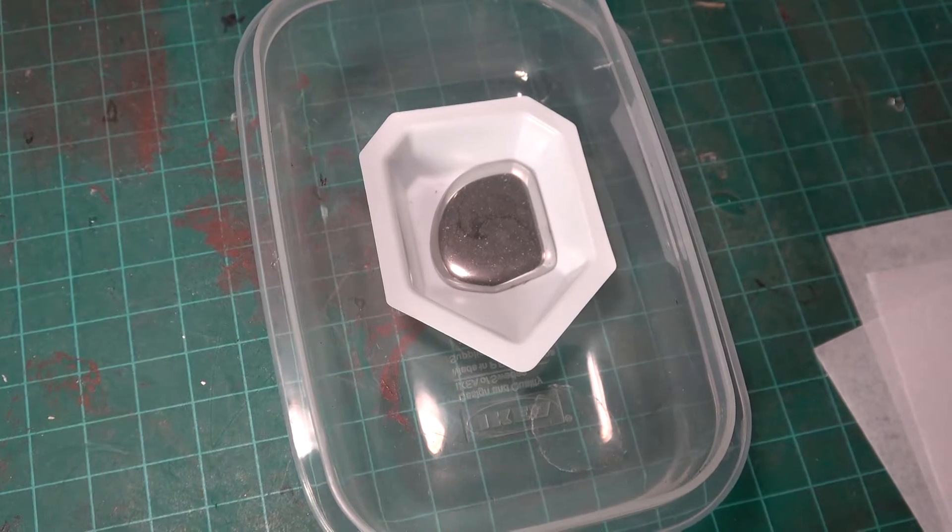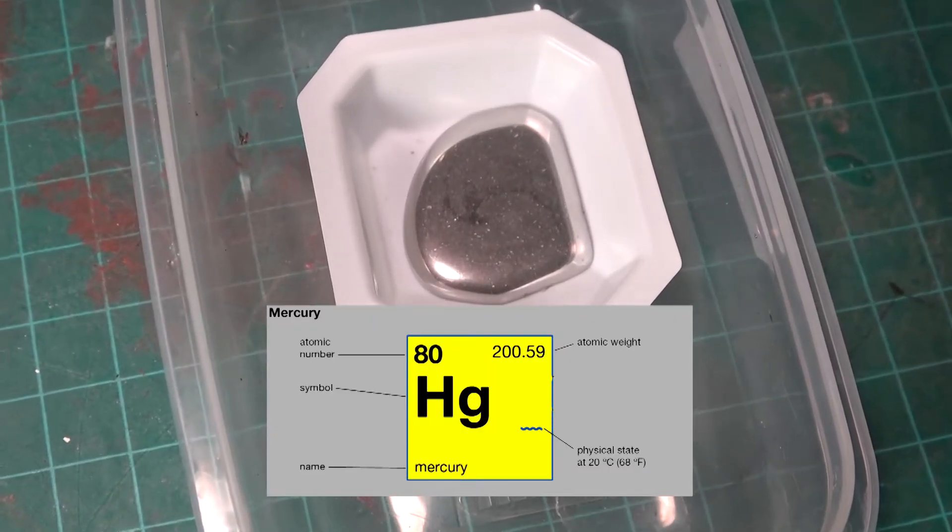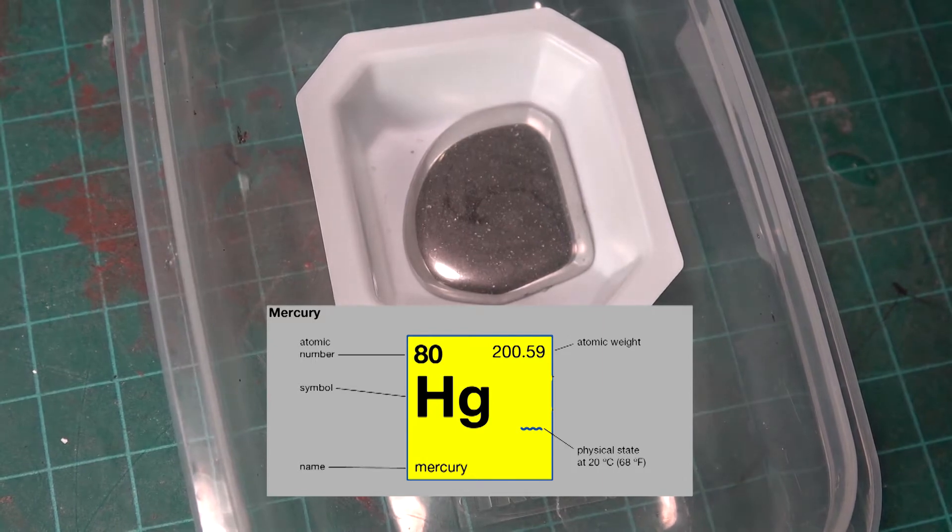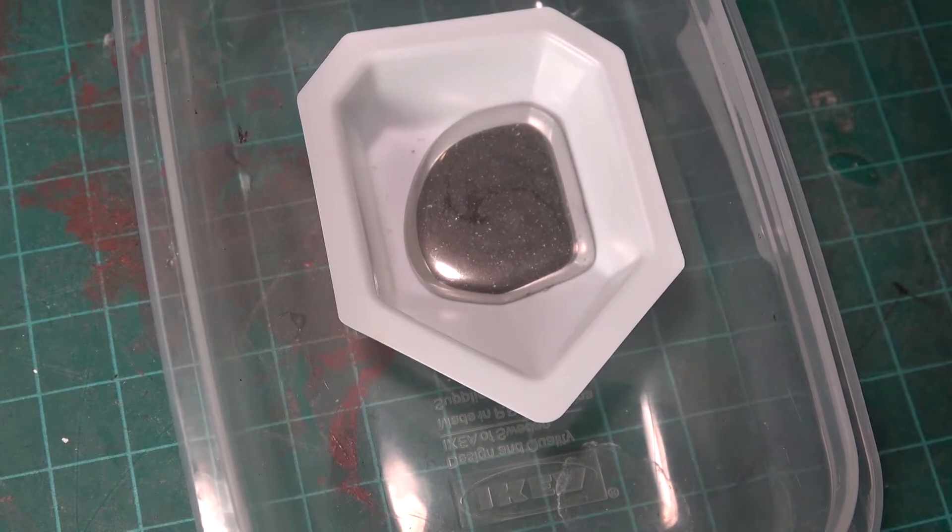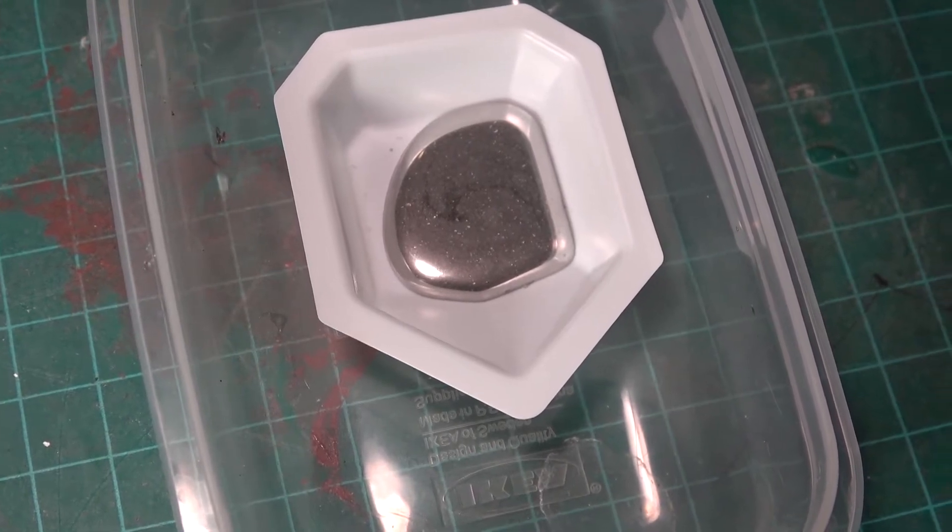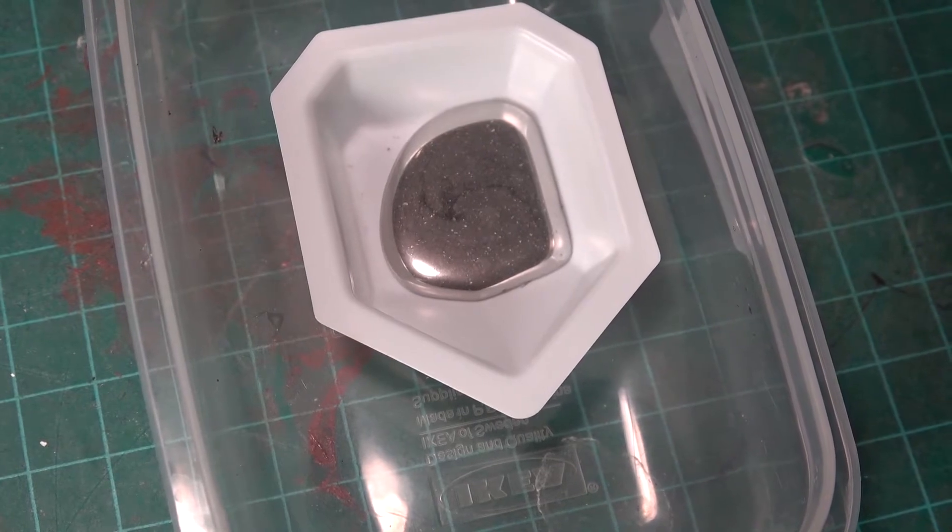So we all should know the properties of mercury by now. If not you can check my last video, but just quickly go over. It is the only metal that is liquid at room temperature. It has a melting point of minus 38.9 celsius and it boils at 356.7 degrees celsius.